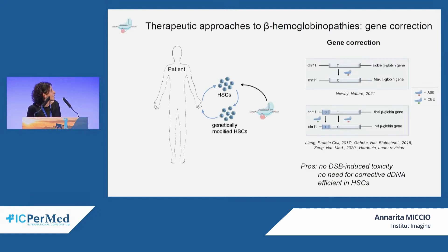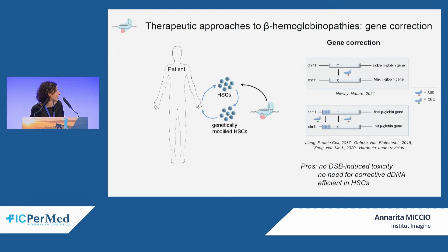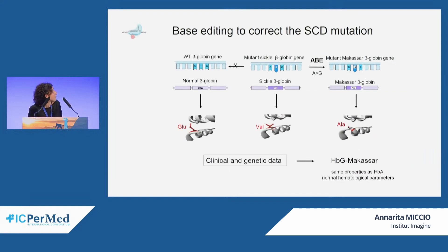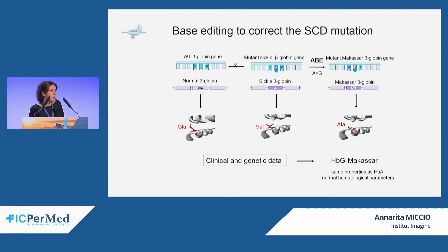Base editing has been exploited to correct the sickle cell disease mutation and some beta-thalassemia-causing mutations. It does not induce double-strand breaks, does not need a donor template, and has been shown to be highly efficient in hematopoietic stem cells. Base editors cannot revert the sickle cell disease mutation directly, but we can use an adenine base editor to convert the mutant A to G, generating the hemoglobin Makassar variant, which has alanine at position six instead of glutamic acid — a benign variant with the same properties as normal hemoglobin.